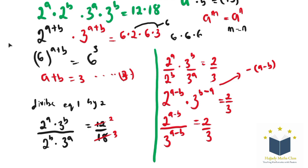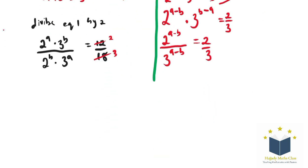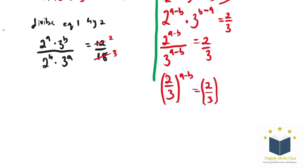So with this, we can form equation 4. So forming my equation 4, since we have the same base on both sides, I have 2 over 3 to the power of A minus B equal to 2 over 3 to the power of 1. So forming equation 4, I have A minus B equal 1.